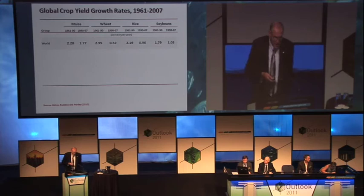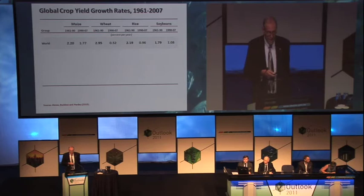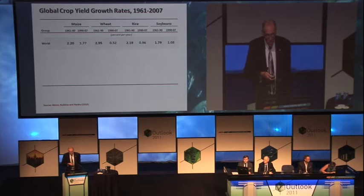So, these are yields. For maize, this is growth rates of crop yields for the world as a whole. For maize it was 2.2% per year up until 1990 and then 1.7% per year after that. For wheat, 2.95, then 0.5. Rice, 2.2, then 1. Soybeans fell again. So for each of these crops, for the world as a whole, productivity growth since 1990 was slower than before.